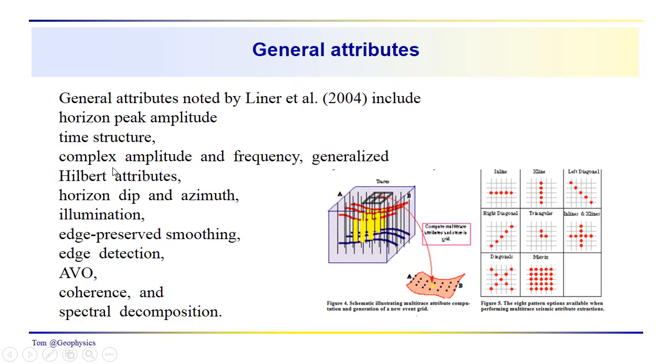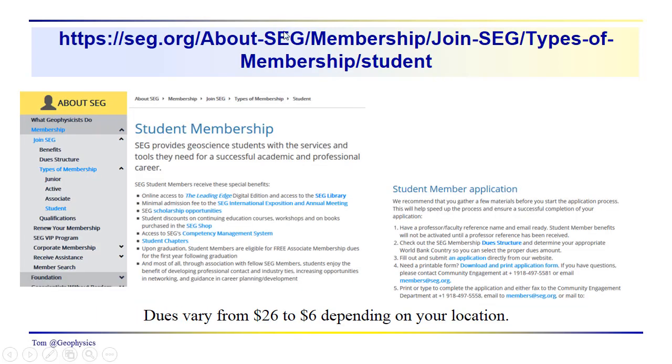This is what's going on inside a 3D volume, and that goes up and down vertically within the volume as well. These general attributes - complex amplitude and frequency, the Hilbert attributes, horizon dip, azimuth - these are the ones we'll talk about. We've already got several videos on AVO, and we need to spend time on spectral analysis. Spectral decomposition is a particularly useful approach - you can do spectral blending, so a very useful technique to work with.